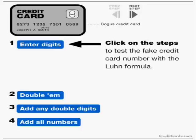With this animation, I hope to explain how your ATM or credit card is validated at the machine using what's called the Luhn algorithm. The Luhn algorithm is a modulus 10 algorithm.